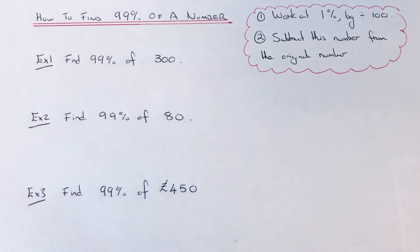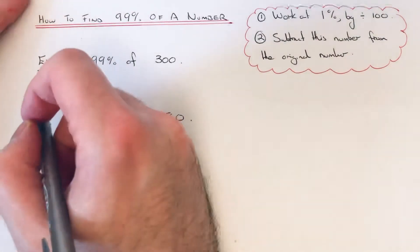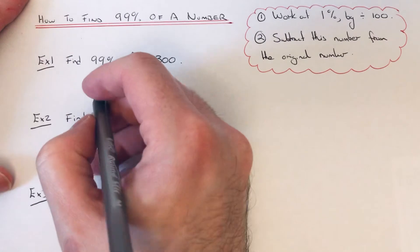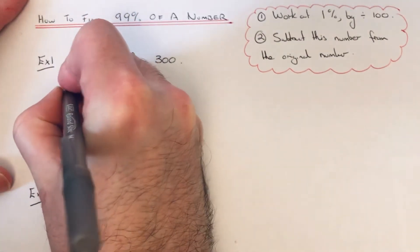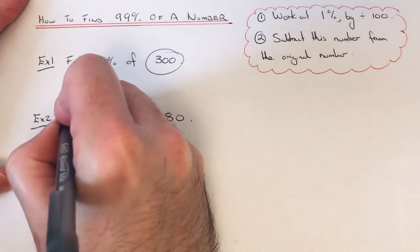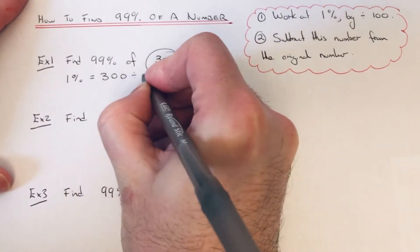So let's have a look at the example here. We've got to work out 99% of 300. So if we do 1% first of all, to get 1% we divide our number by 100, so 300 divided by 100 is 3.